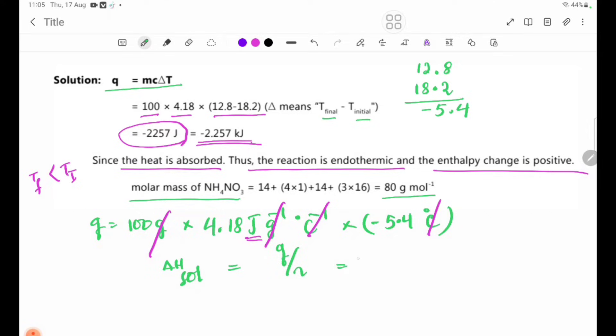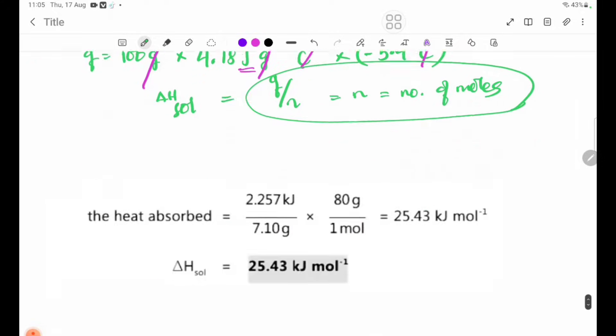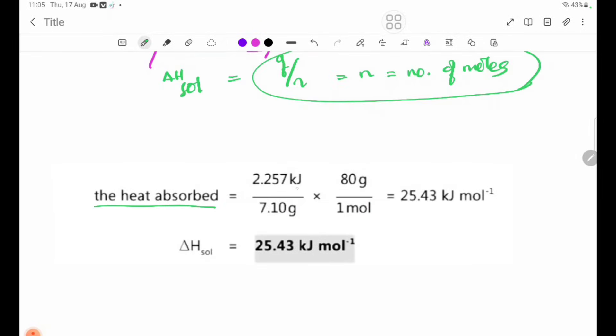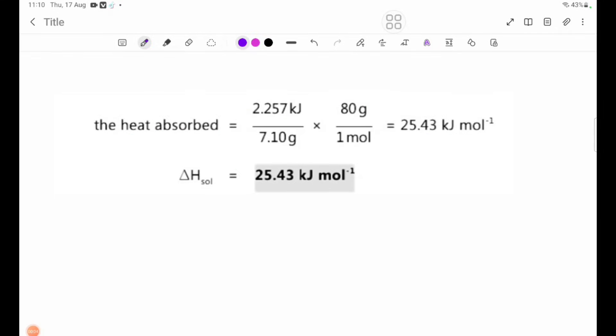N equals number of moles. Q divided by n, where n equals mass divided by molar mass. Q equals minus 2.257 kilojoules.